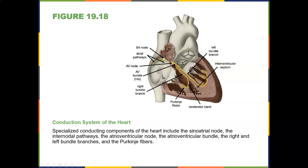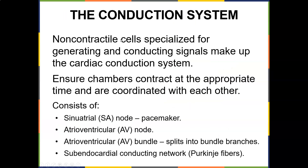The SA node is set as a pacemaker at 60 to 100 beats per minute. From the AV node the impulse goes into the bundle of His, separates into the right and left bundle branches, and then travels through the Purkinje fibers delivering the electrical current. The cardiac conduction system consists of non-contractile cells specialized for generating and conducting signals. It includes the SA node (pacemaker), the AV node, the atrioventricular bundle splitting into bundle branches, and the sub-endocardial conducting network beneath the endocardium.